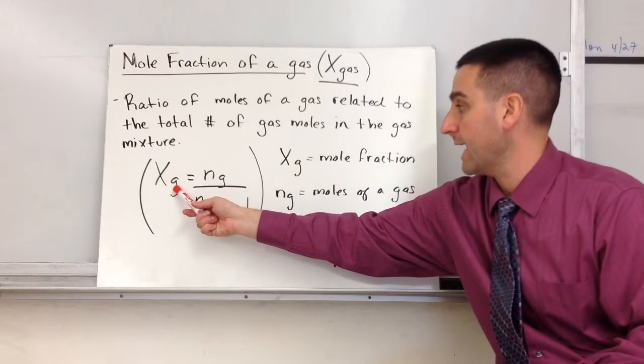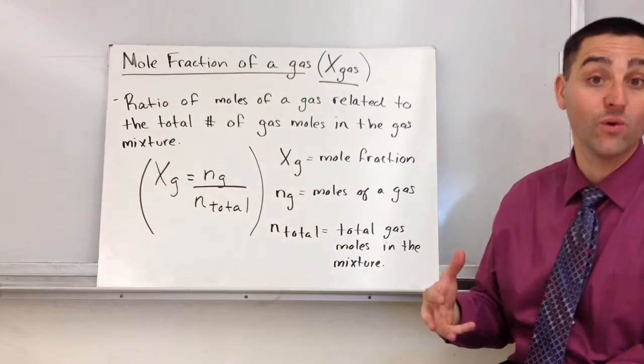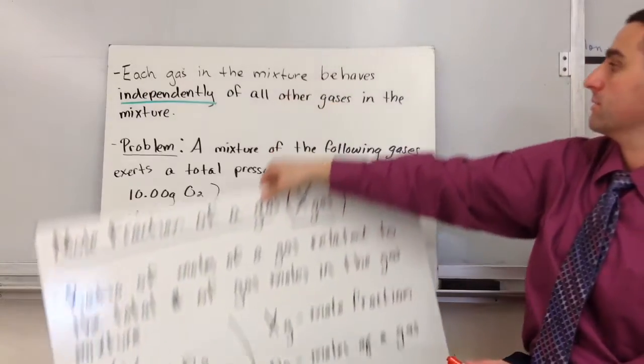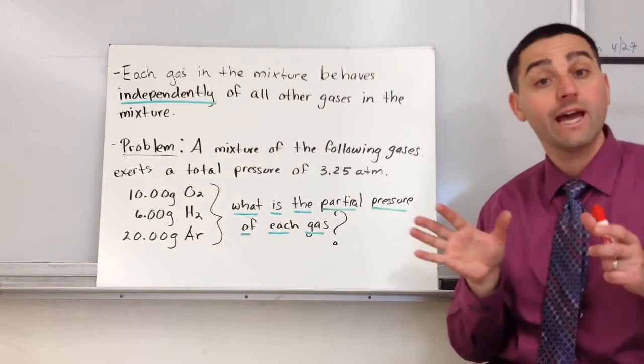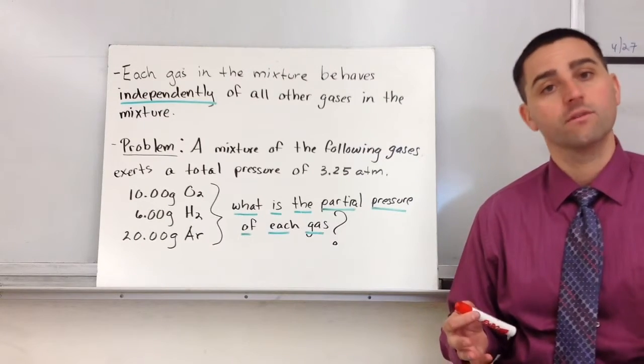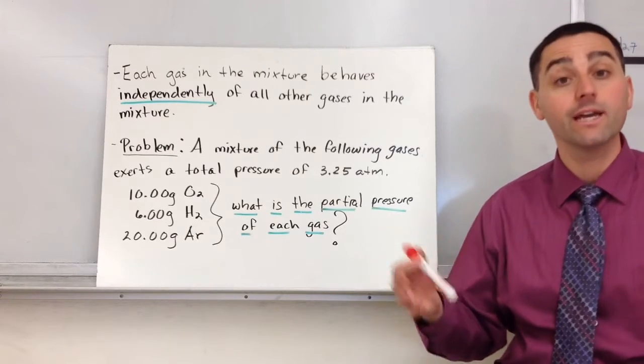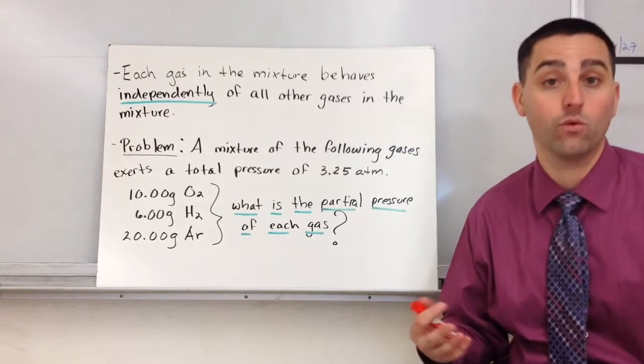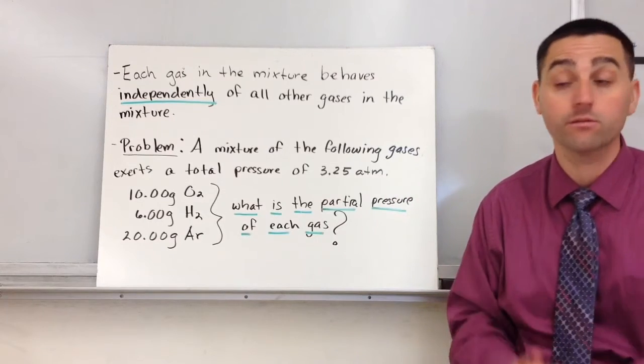Mole fraction of the gas is the number of moles of that particular gas divided by the total moles of the gas mixture. Each gas in a mixture is going to act independently of the other gases that are in that mixture. For example, think of our atmosphere. Our atmosphere has nitrogen and argon and oxygen and CO2 and a myriad of other gases. Each one of those gases exerts a certain mole fraction or pressure within the total pressure of our atmosphere for that particular gas.